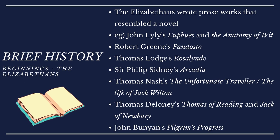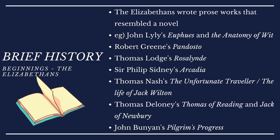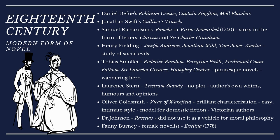A brief history: the beginnings of prose writing with the Elizabethans. The Elizabethans wrote prose works that resembled a novel — note that they resembled a novel, not exactly a novel. For example: John Lyly's Euphues and the Anatomy of Wit, Robert Greene's Pandosto, Thomas Lodge's Rosalind, Sir Philip Sidney's Arcadia, Thomas Nash's The Unfortunate Traveler or The Life of Jack Wilton, Thomas Deloney's Thomas of Reading and Jack of Newbury, and John Bunyan's Pilgrim's Progress.